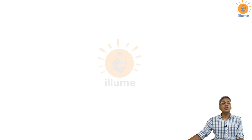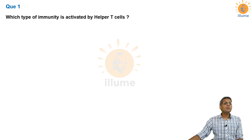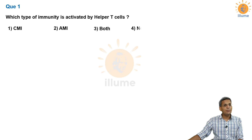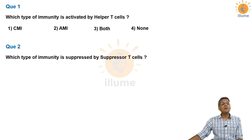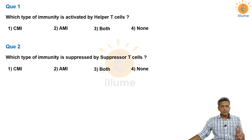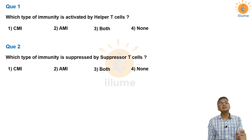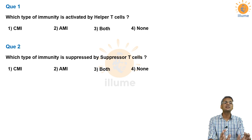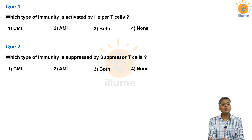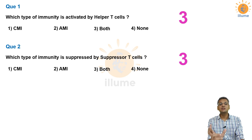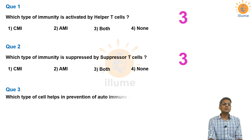Suppressor T cells inhibit immunity only when the infection has been controlled. Here are important questions: Which type of immunity is activated by helper T cells, and which is suppressed by suppressor T cells? Many students answer 'CMI only,' but helper T cells activate TC as well as B cells — B cells are responsible for AMI. So the answer is both: helper T cells activate both CMI and AMI, and suppressor T cells suppress both CMI and AMI.